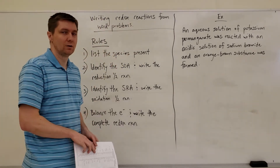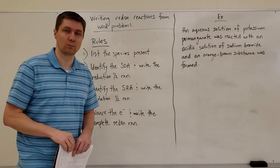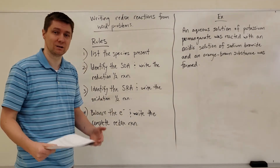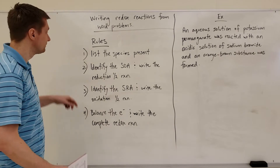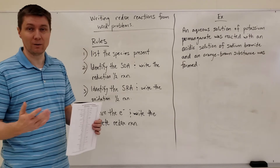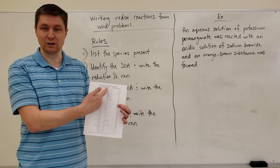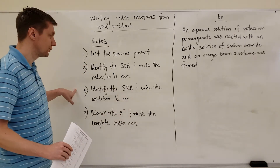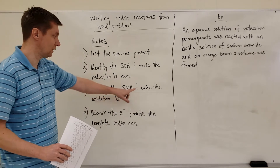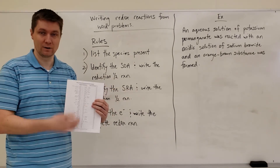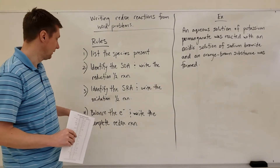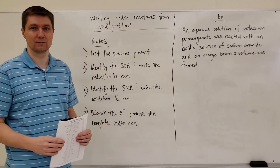We'll use this table when writing redox reactions from word problems. Here are the rules you need to have memorized for an assessment. First, list the species present. Then identify the strongest oxidizing agent from that list and find its half reaction in the chart. Do the same for the strongest reducing agent, making sure to write its oxidation half reaction as the reverse of what's in the chart. Finally, balance the electrons and write out the full, complete redox reaction.